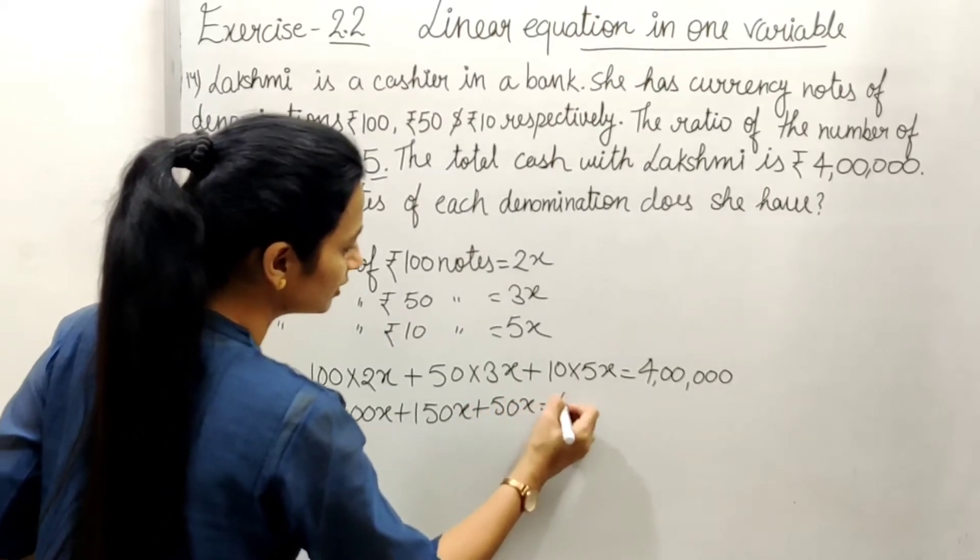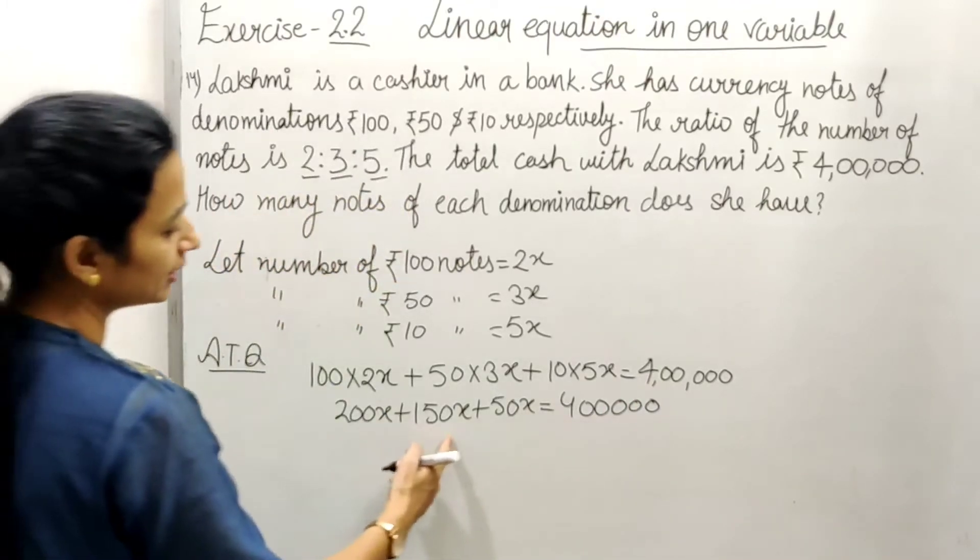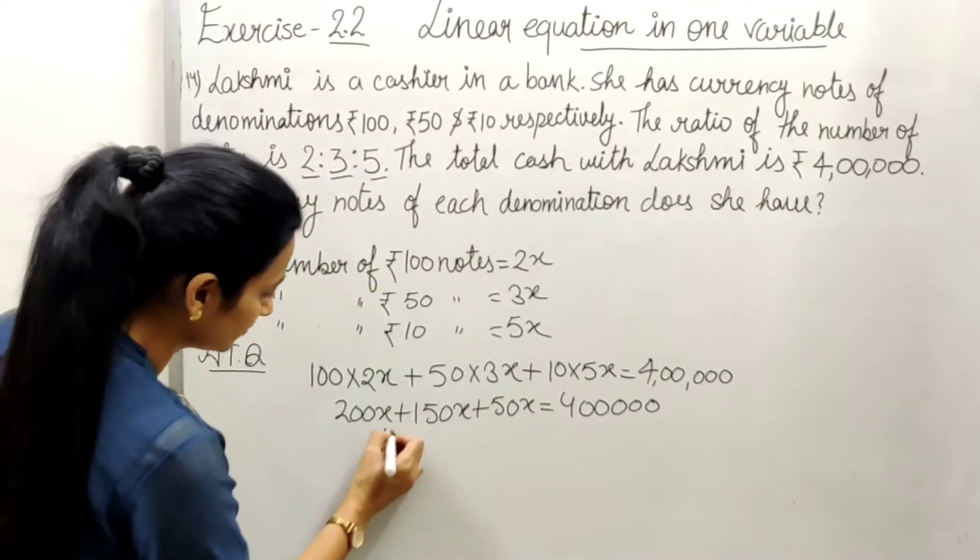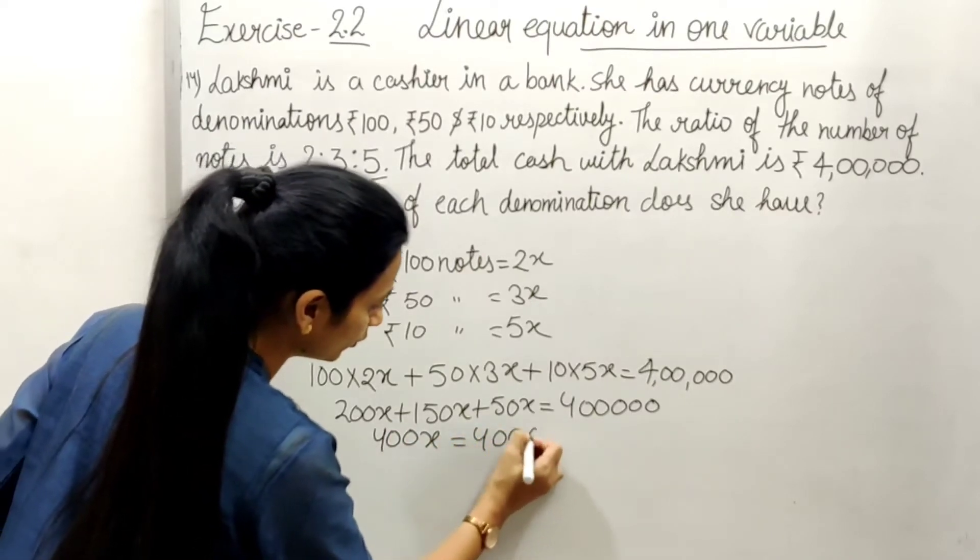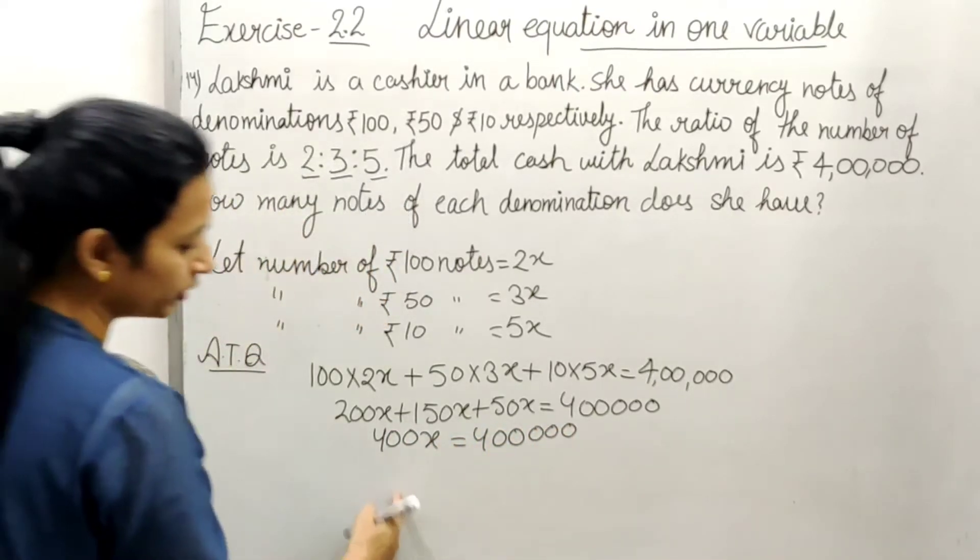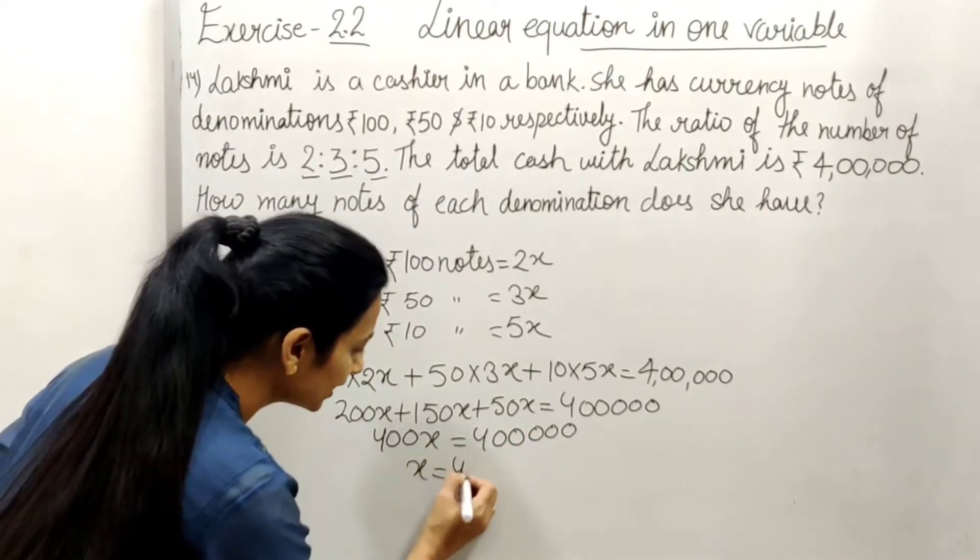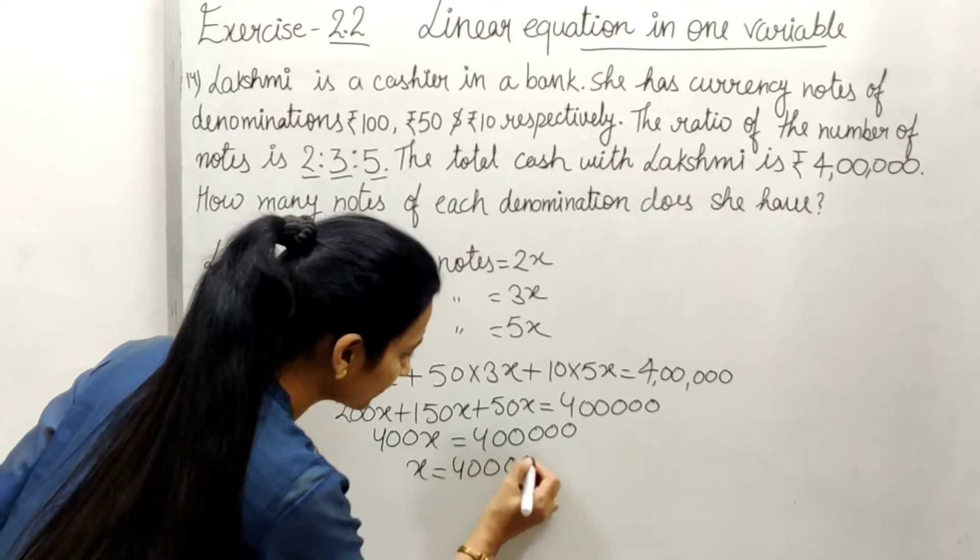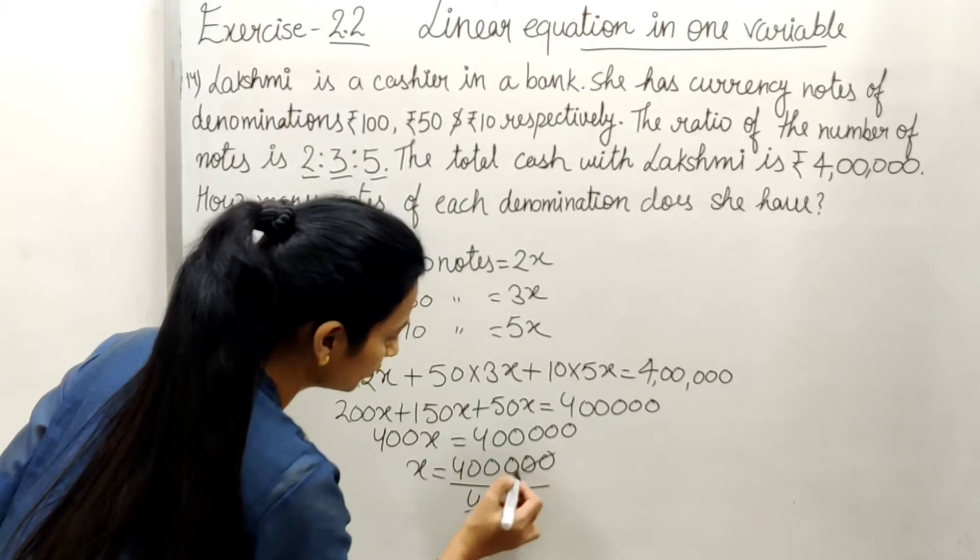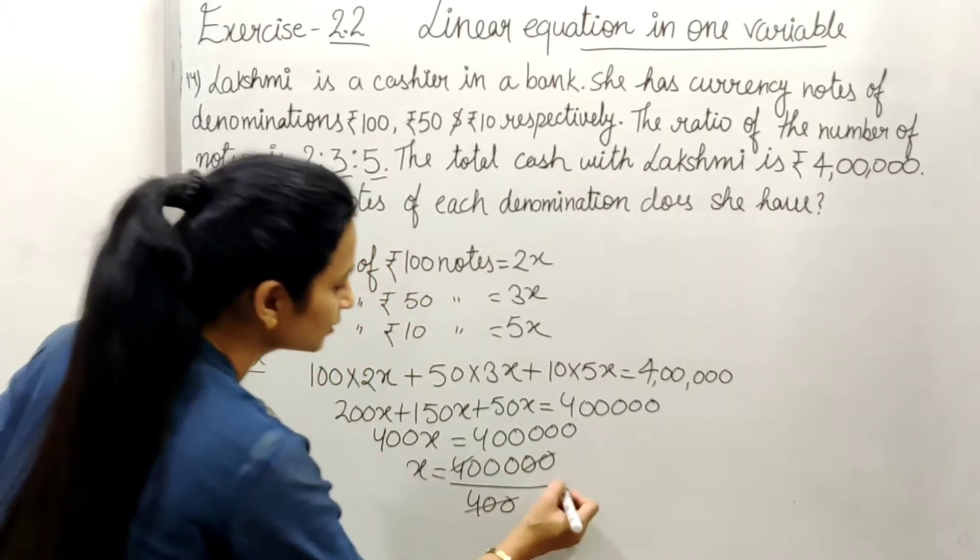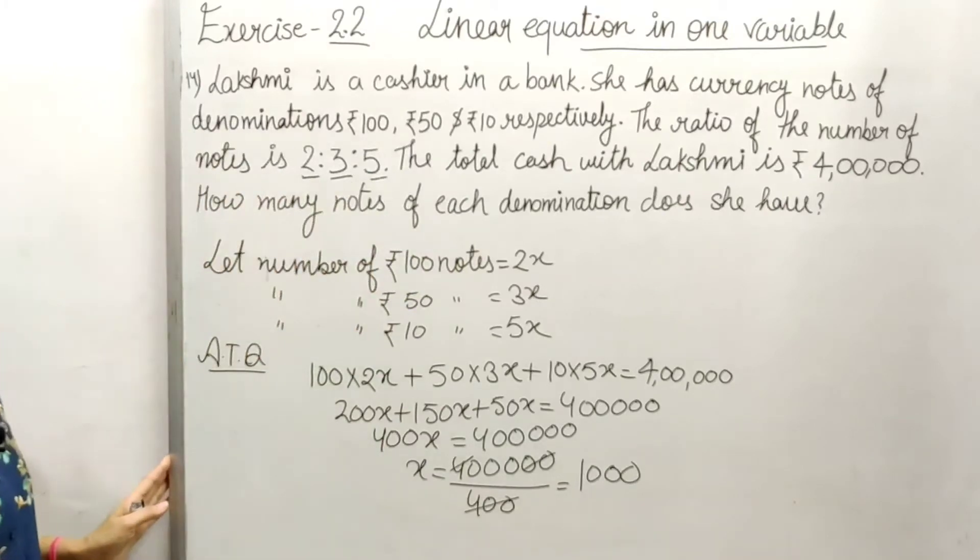This gives us 400x equals 4,00,000. Transposing 400 to the other side, the value of x is 4,00,000 divided by 400. Canceling the zeros, we finally get x equals 1000.